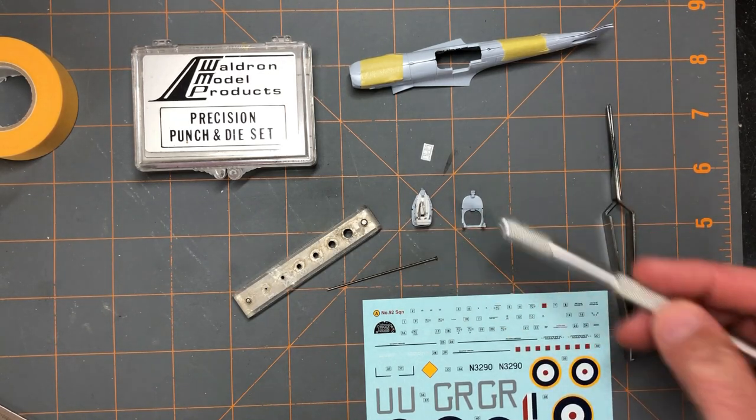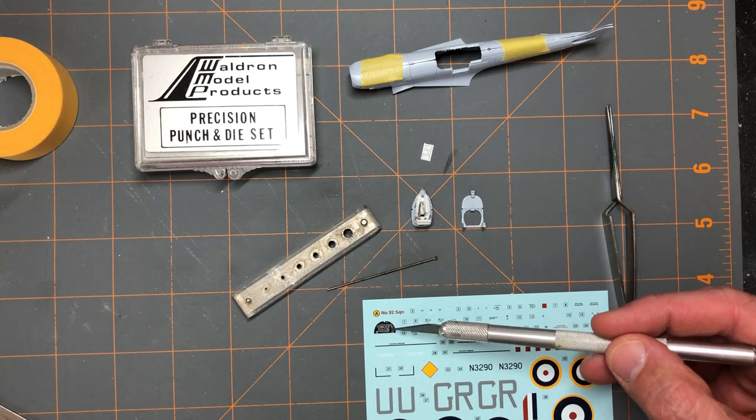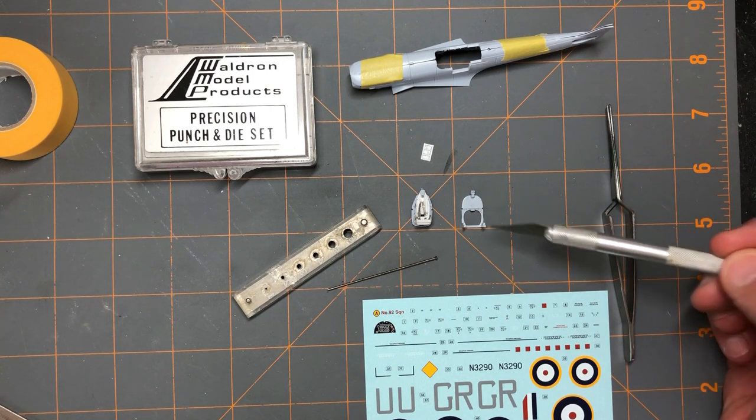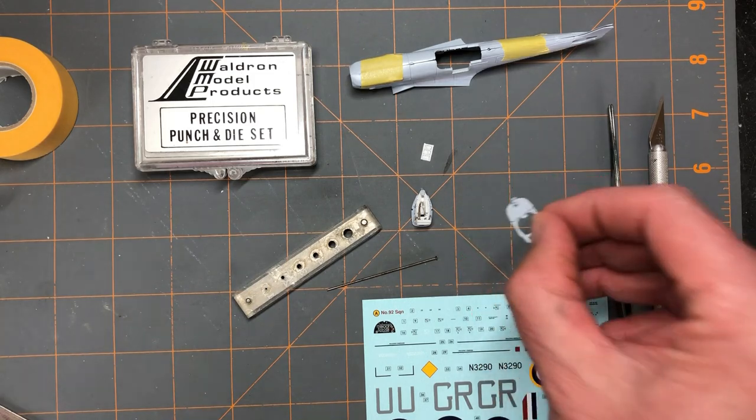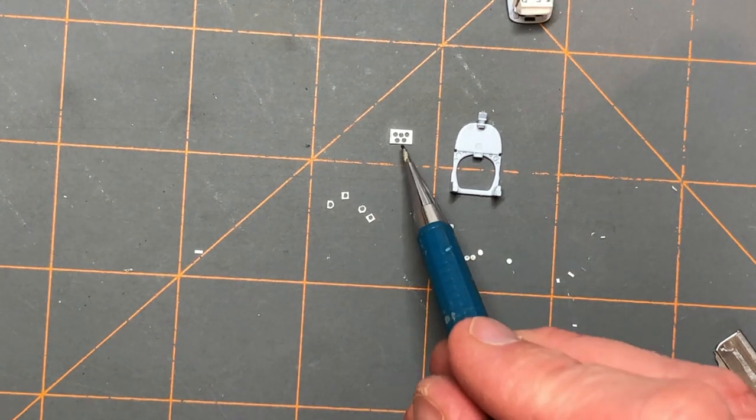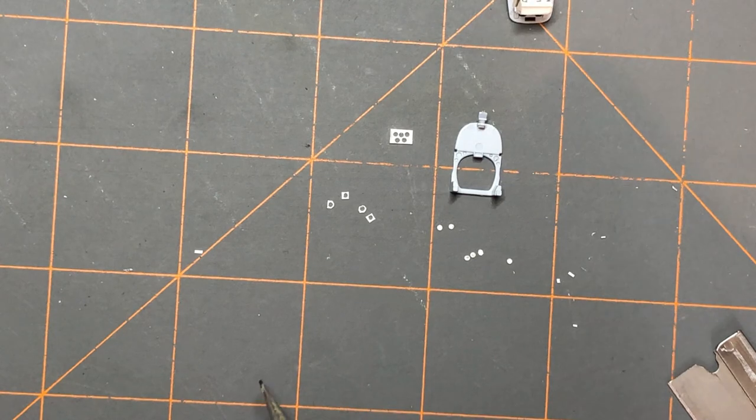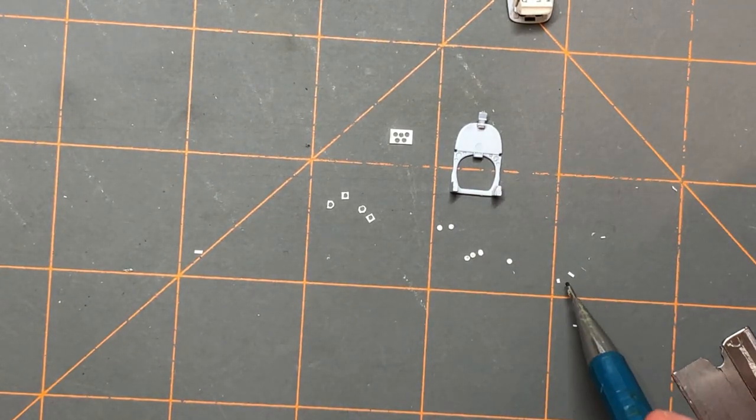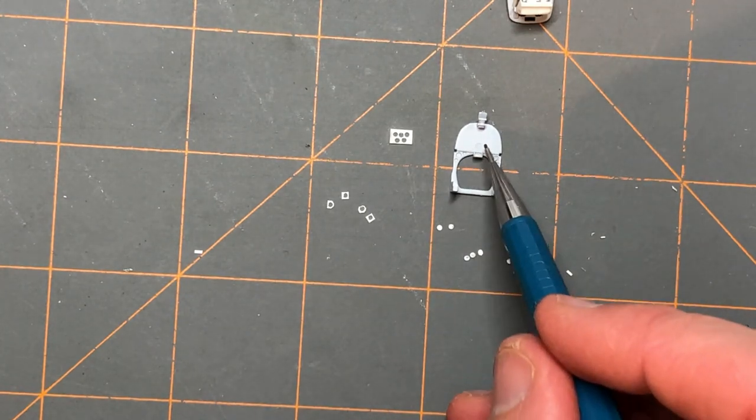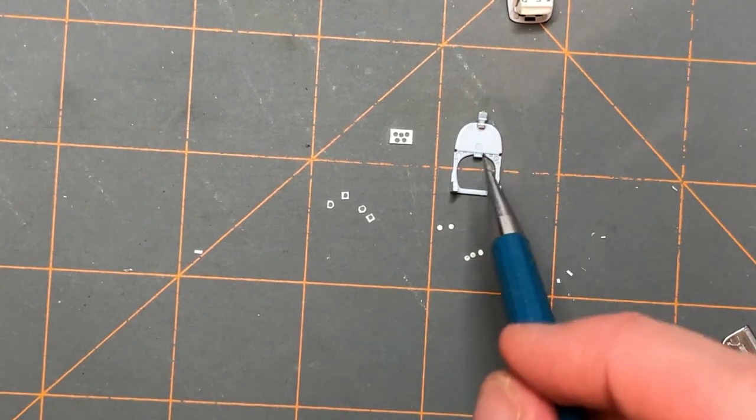Next, using a micro punch and die set from Waldron combined with the kit decal part, I'll punch out some instrument bezels. Probably do a main cluster and then do a couple individual ones. Then I'll just put that cluster and individuals onto the kit part, which as you can see is flat, just intended for a 2D decal to be added. I've got the main cluster punched out here, four individual bezels punched out, and then the leftover circles that came from the instrument bezels. I can use those to add a little detail along with some tiny pieces of strip to represent switches and things like that.